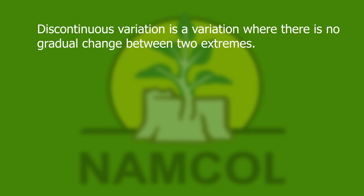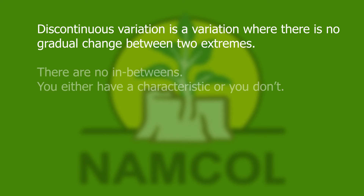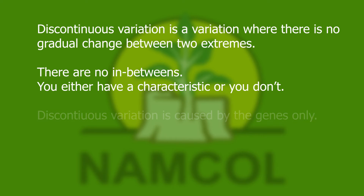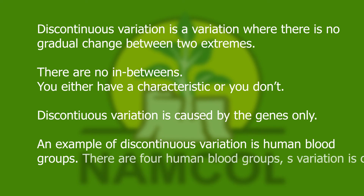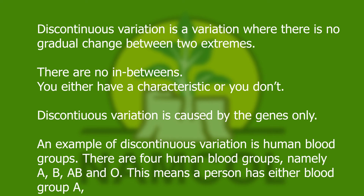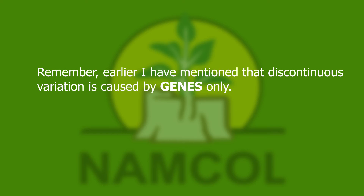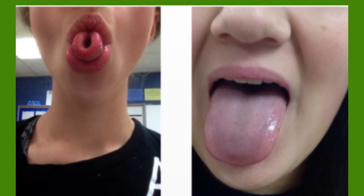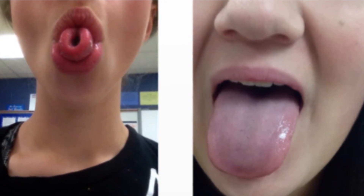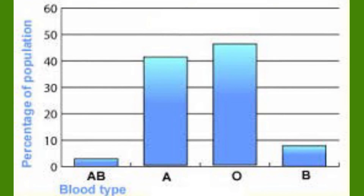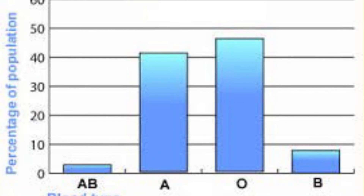Discontinuous variation is a variation where there is no gradual change between the two extremes — there are no in-betweens. You either have a characteristic or you don't. Discontinuous variation is caused by genes only. A good example is human blood groups: there are four human blood groups — A, B, AB, and O. Your blood group is determined by the genes you have inherited from your parents, so even if you change the environment, your blood group will remain the same. Another example is your ability to roll your tongue or not — you are either a tongue roller or not. A bar graph is the best graph to represent discontinuous variation, as it has separate bars showing specific categories.